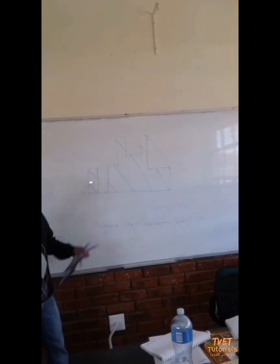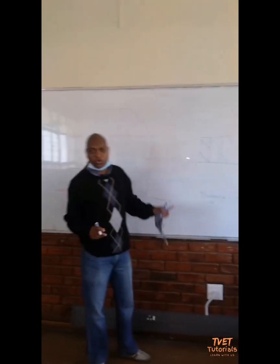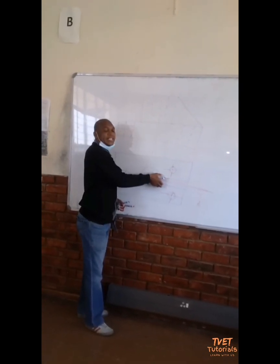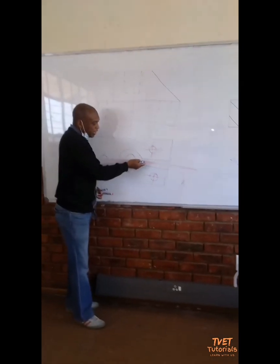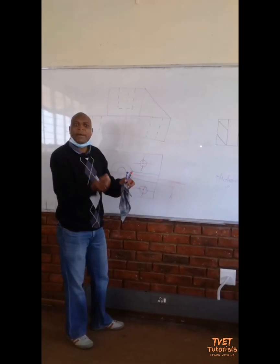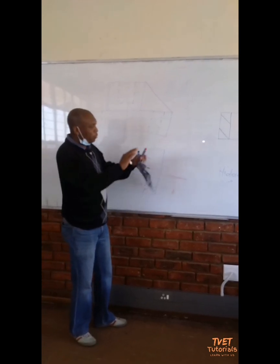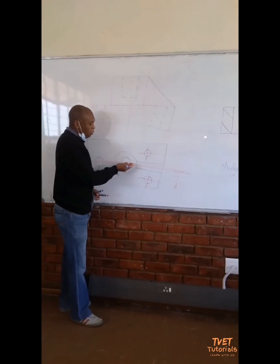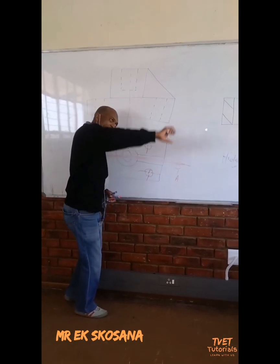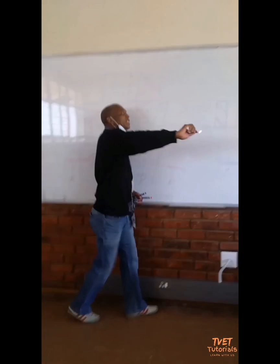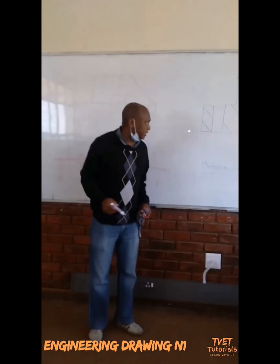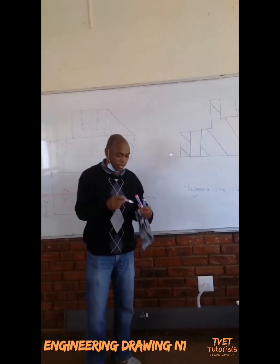Here, there is also no sectioning, but this area is not a hole — there is no hole here. It is simply because it is a support. Why do we not section the support when we cut it like this? That is the rule of sectioning. Once you cut a support, that area of the support is not sectioned. That is why here there is no sectioning — it is not a hole, it is simply because it is a support.